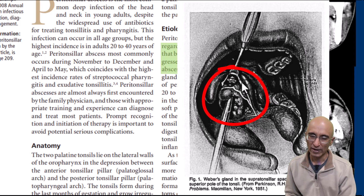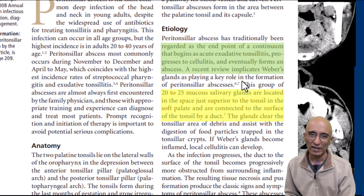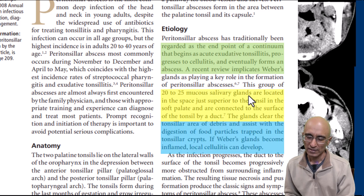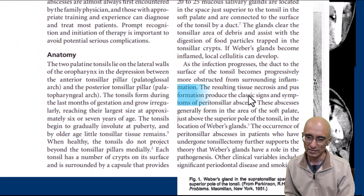There is a collection of minor salivary glands along the superior aspect of the tonsil called Weber's gland. These are collection of salivary glands at the junction of the tonsil with the soft palate. Secretions from Weber's gland drain on the surface of the tonsil via a duct which helps in digestion of food particles trapped in the tonsillar crypts. When there is acute tonsillitis, these ducts can get inflamed and obstructed, which can lead to the formation of abscess within the minor salivary glands.